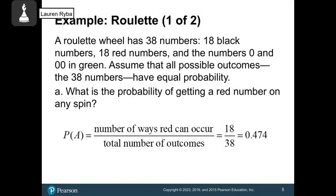A roulette wheel has 38 numbers. There are 18 that are black, 18 that are red, and then the numbers 0 and 00 are in green. On the roulette wheel, each space is equally sized, so we can assume that all possible outcomes for those 38 numbers are going to have an equal probability. So we could then ask the question, what is the probability of getting a red number on a single spin or on any spin? Well, the probability we get a red is the number of ways red can occur, which is 18, out of the total number of ways, 38, or about 0.474 of the times.